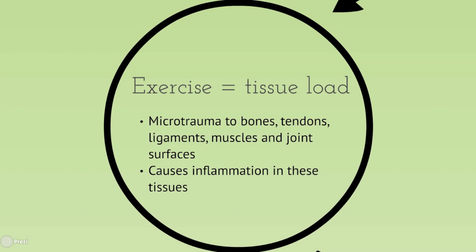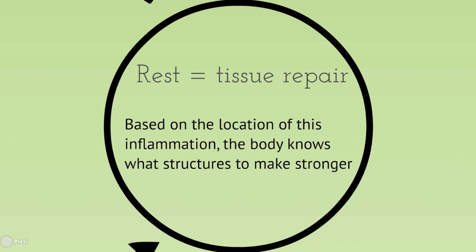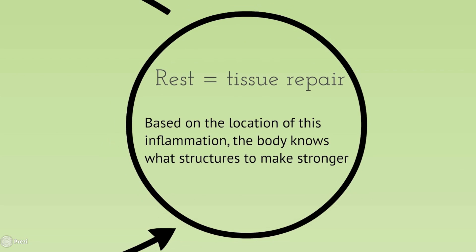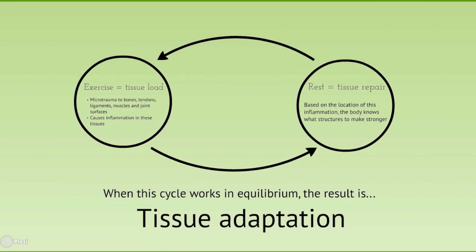Based on where this inflammation has occurred, your body will lay down new tissue, allowing your bones, tendons, ligaments, joint surfaces, and muscles to become stronger. When this process occurs in an equilibrium, you get tissue adaptation occurring.